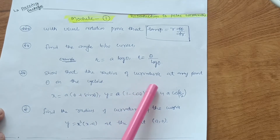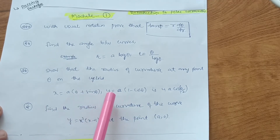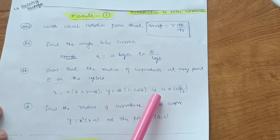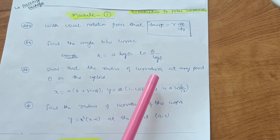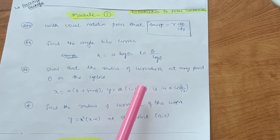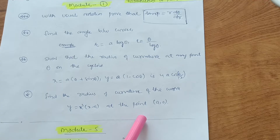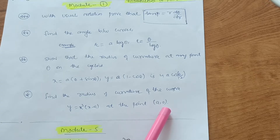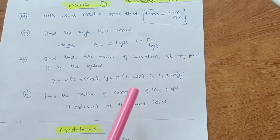The third topic is: show that the radius of curvature at any point θ on the cycloid — where x equals a(θ + sin θ) and y equals a(1 − cos θ) — is 4a·cos(θ/2). You need to show this radius of curvature. The fourth topic is finding the radius of curvature of a curve; try three to four problems, for example y equals x³(x − a) at the point (a, 0). That covers Module 1 — only four topics.